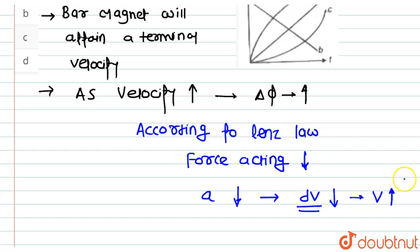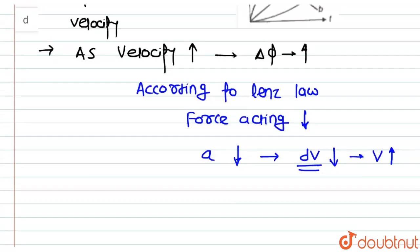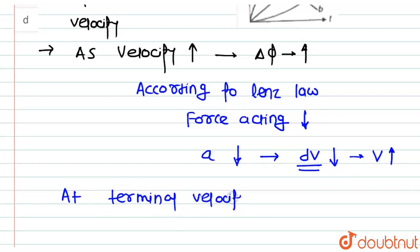The magnetic force acts in the opposite direction to the weight of the magnet. At terminal velocity, the magnetic force becomes equal to the weight of the magnet, meaning the net force is zero.